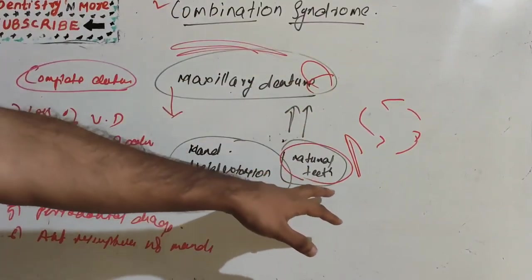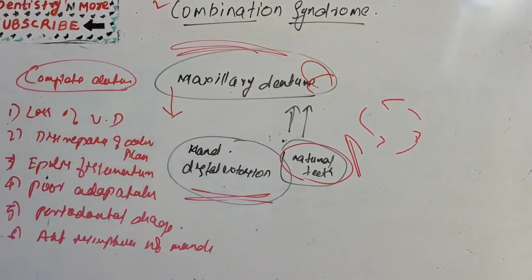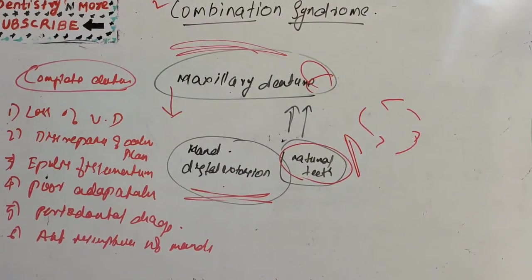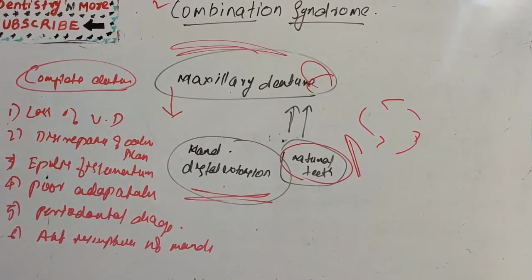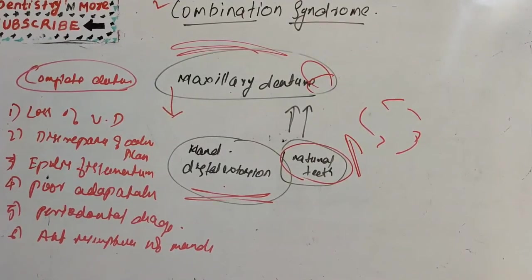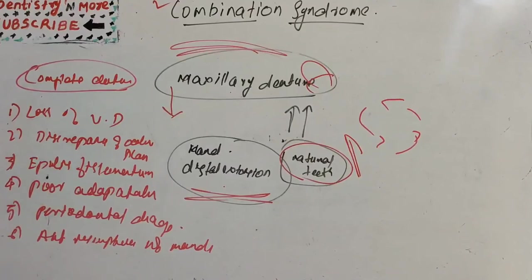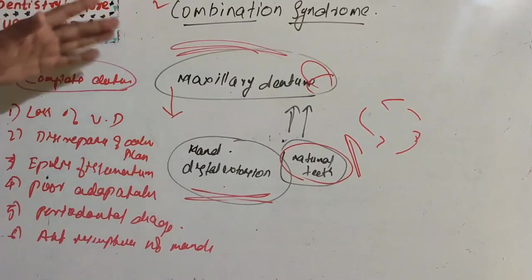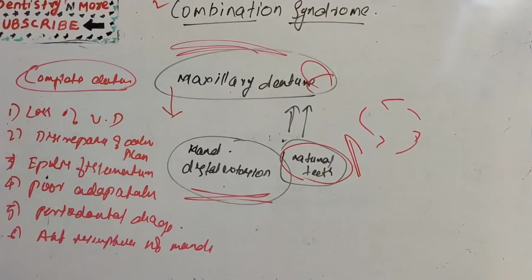Then spatial resorption of mandible, loss of vertical dimension, occlusal plane discrepancy, epulis fissuratum, poor adaptation, and periodontal changes. Ultimately, there is loss of retention of the dentures with associated problems. This is combination syndrome: when we keep a complete denture and partial denture in upper and lower arch with remaining natural teeth at the mandibular anterior region.